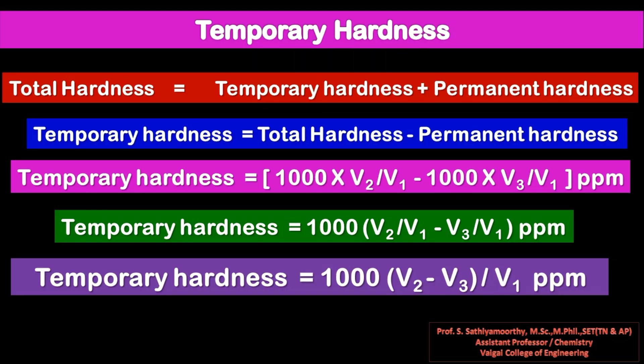Temporary hardness equals total hardness minus permanent hardness. Total hardness is 1000 × V2/V1 and permanent hardness is 1000 × V3/V1, so temporary hardness = 1000 × (V2 − V3)/V1 ppm. This is how all types of hardness are estimated.